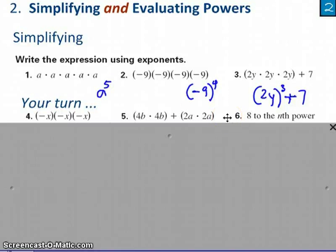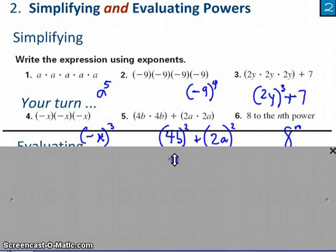Okay, I'm going to assume that you did hit the pause button, and now I'm going to show you the answers and talk through them very quickly. I hope my handwriting is legible. That's supposed to be (-x) to the third. That's (4b) squared, because I have two of them, plus (2a), also squared, because again, I have two of them. And this is supposed to be an eight with an exponent that's an n. Eight to the nth power can be written more simply in that fashion.